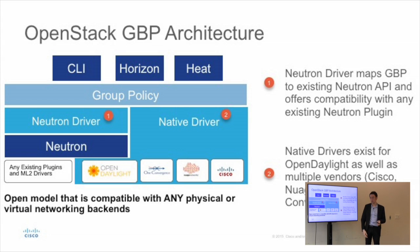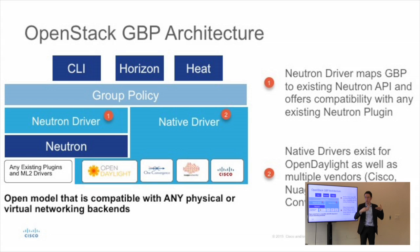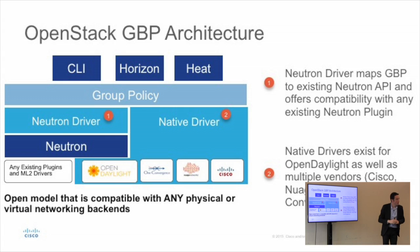Whatever you use underneath is your choice. You could use standalone switches with a regular Neutron driver and it will just configure VLANs for you. If you use ACI, however, it becomes a one-to-one mapping because the policies in ACI will be received from Group Based Policy and will be exactly the same — similar to the Docker side.